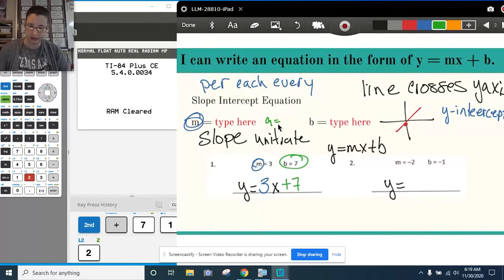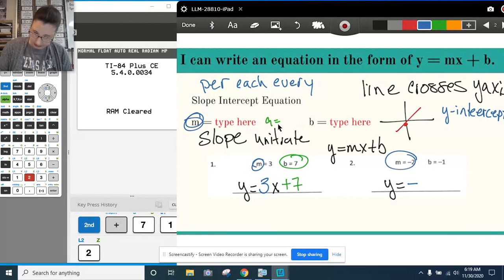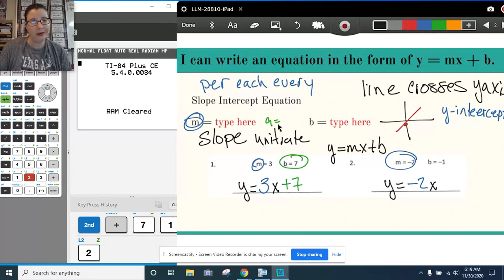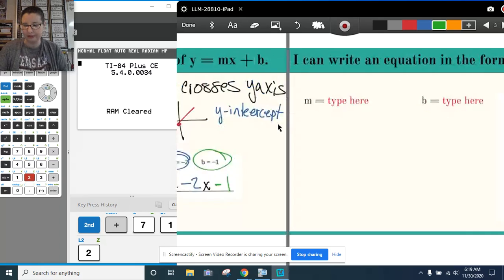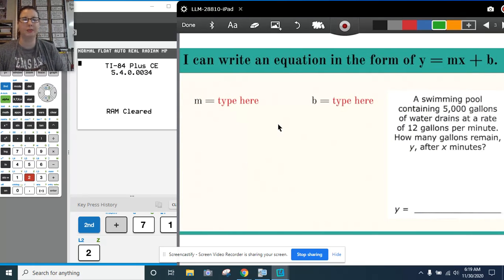Now on my second example, I'm going to write my m is negative 2. So it's negative 2x. And where I would put a plus b, because this b is a negative 1, I'm going to subtract 1. Now pretty simple. We've done it before. We've seen this before. So let's go into another way we might see it.